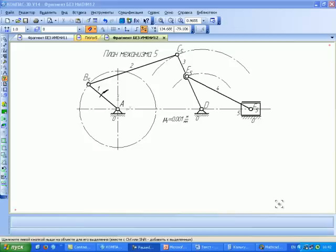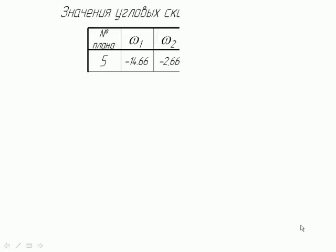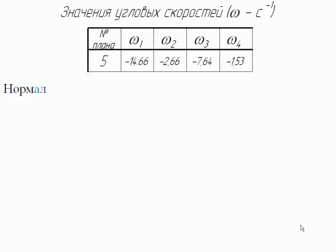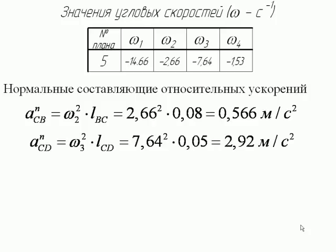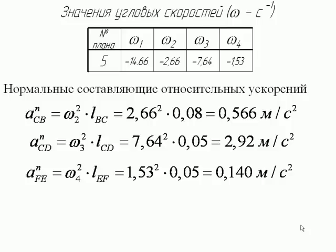Построим план ускорений для плана механизма номер 5. Предварительно вычислим модули нормальных составляющих относительных ускорений, для чего нам понадобятся значения угловых скоростей звеньев для плана 5. Нормальные составляющие равны: точки C относительно точки B – 0,566; точки C относительно точки D – 2,92; точки F относительно точки E – 0,14 м/с². Тангенциальные составляющие перпендикулярны соответствующим звеньям.